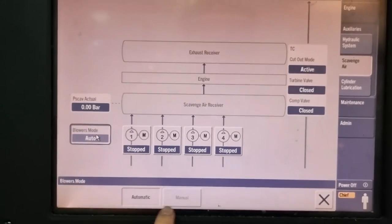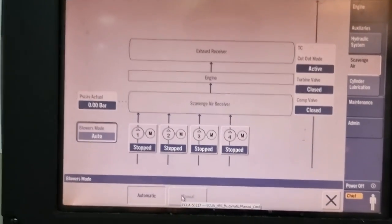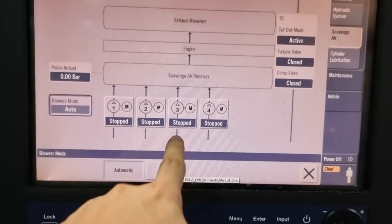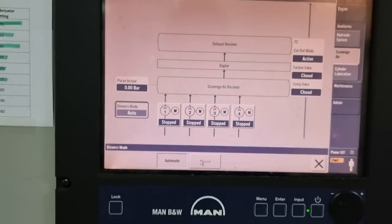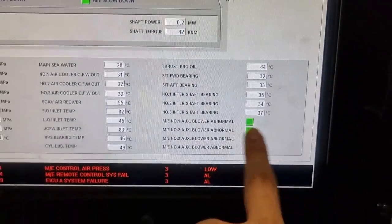Checking the MOP, we don't have any more abnormal alarm, and as well as in our Aconi system, the auxiliary blower indication is already on green light.